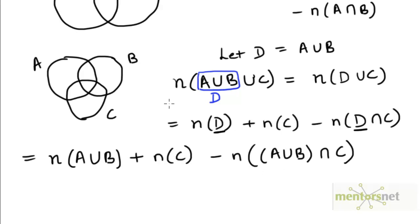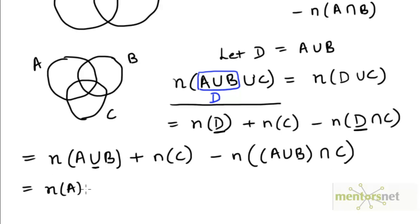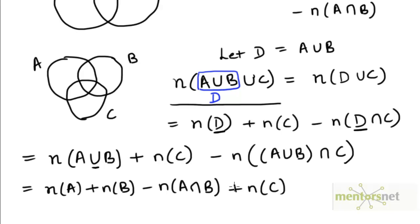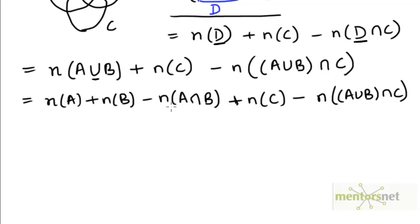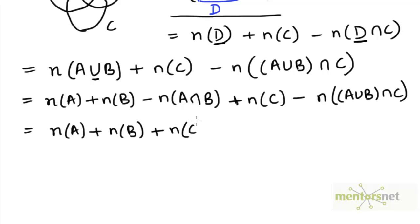Our goal is to have on the right hand side purely the sets themselves and their mutual intersections — no unions on the right hand side. Let's first eliminate this union by applying the same formula: the number of elements in A union B equals the number of elements in A plus the number of elements in B minus the number of elements in A intersection B, writing the remaining terms as they are. So we have A, B, A intersection B, and C. We still have a union remaining which we need to eliminate. Let's rearrange these four terms by bringing together the individual sets A, B and C, minus the number of elements in A intersection B.